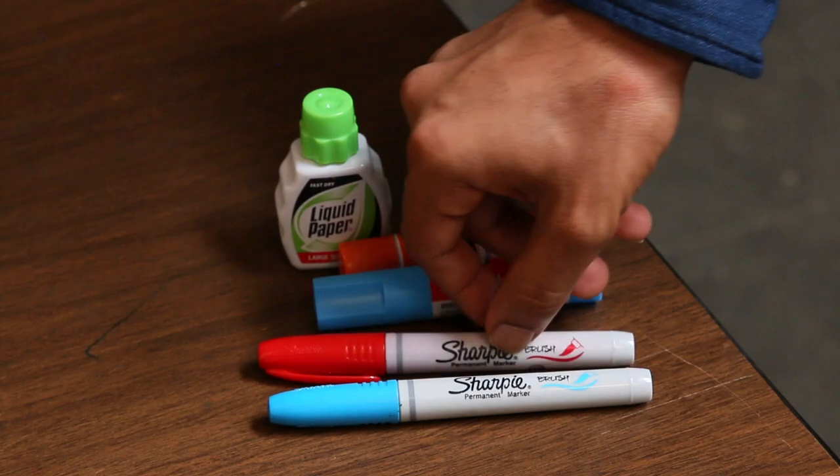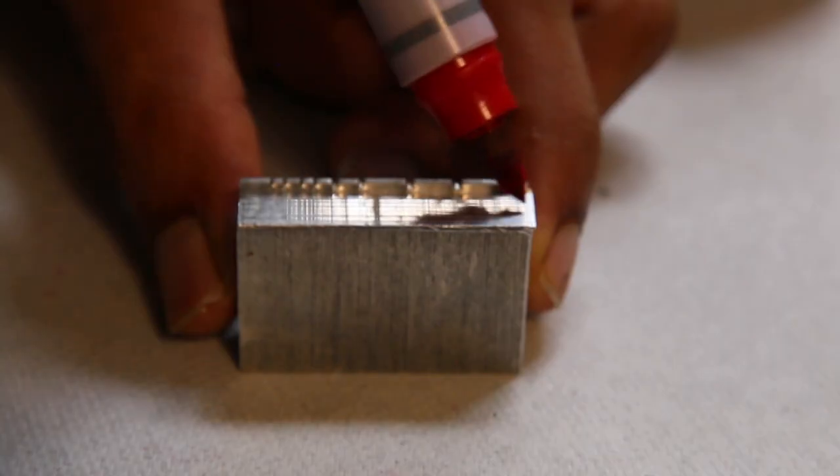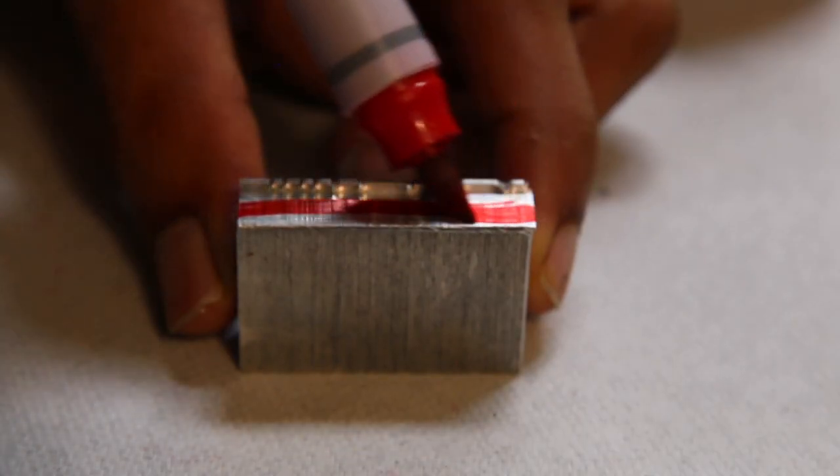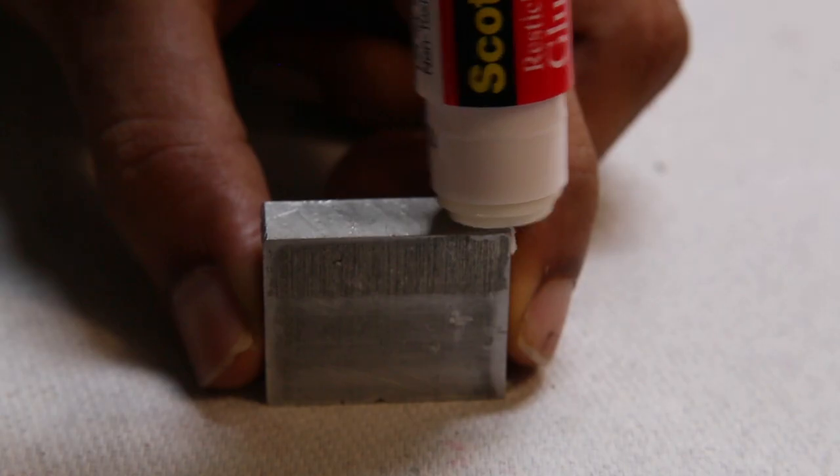And we were curious, what is the mechanism behind the action of these chemicals? So initially we thought that perhaps there's a secret ingredient in all of these media, in the Sharpie and the glue, which is causing this improvement in the cutting. But curiously, we didn't find any common ingredient amongst all of these media and we were perplexed as to why this was happening.